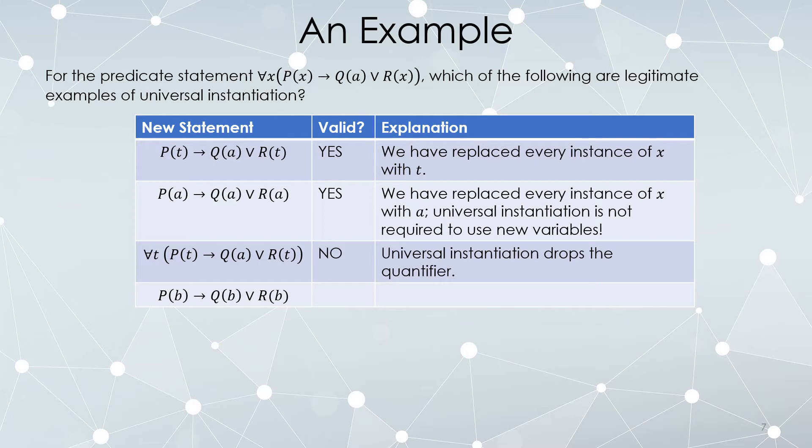How about this third one? For every t, P(t) implies Q(a) or R(t). That is not an example of universal instantiation because every time you do an instantiation you drop the quantifier. How about P(b) implies Q(b) or R(t)? No. Universal instantiation does allow us to replace these x's with b's, but not this a here.